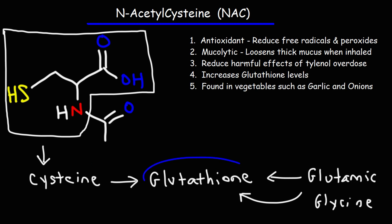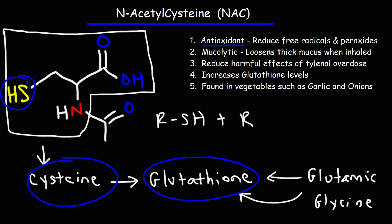Both glutathione and cysteine can act as antioxidants. The key feature — the part of the molecule that has this antioxidant ability — is the thiol functional group. The thiol can reduce free radicals and peroxides. A free radical is basically a molecule or compound that has an odd number of electrons. These free radicals are like scavengers in the body; they desperately want another electron to have an even number of electrons, and so they can be very damaging to other molecules, compounds, and proteins in the body.